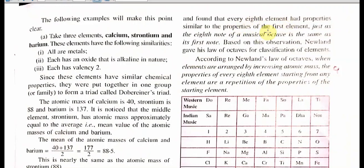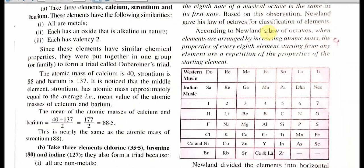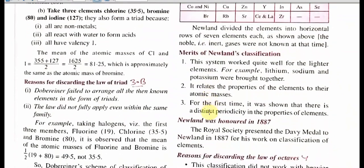Like in music — in English style we know Do, Re, Mi, Fa, Sol, La, Ti, Do; and in Hindi we know Sa, Re, Ga, Ma, Pa, Dha, Ni, Sa. Starting from Sa and ending with Sa. According to Newland's Law of Octave, when elements are arranged by increasing atomic mass, the property of every eighth element is a repetition of the property of the starting element. So if we go from the first to the seventh, the eighth will be similar to the first.